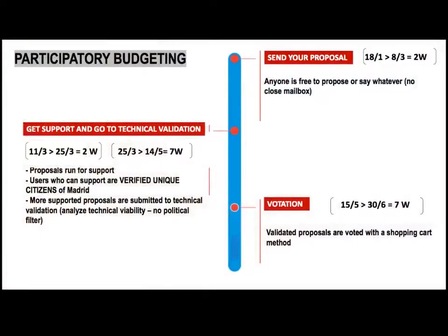You have to run for support in a second phase. Then the proposals that are most supported go to technical revision, where civil servants analyze and budget them. Then there's a vote.